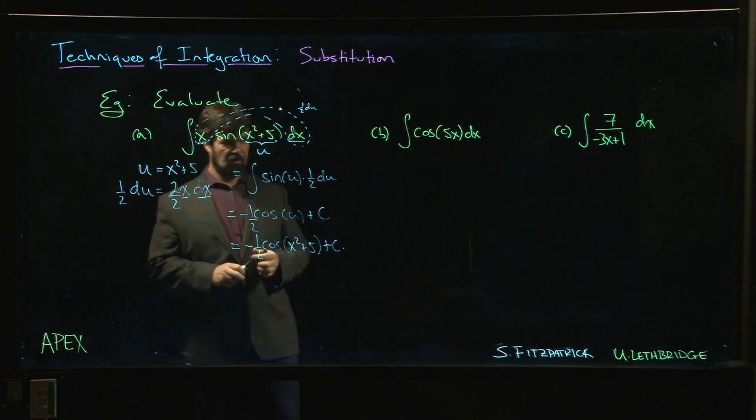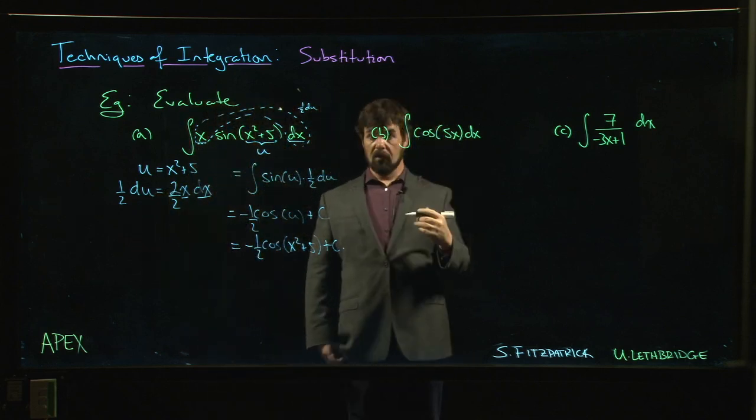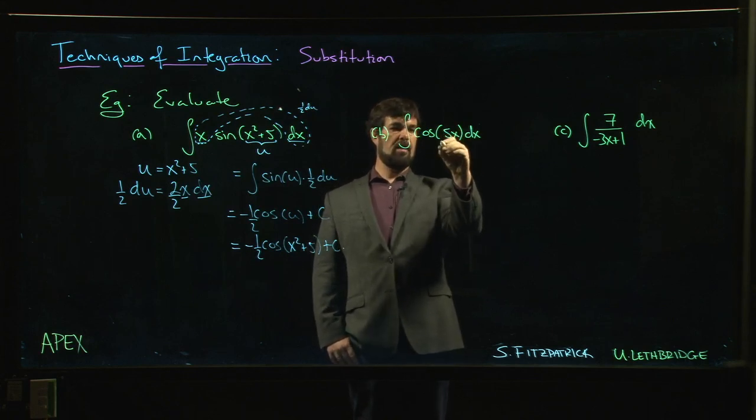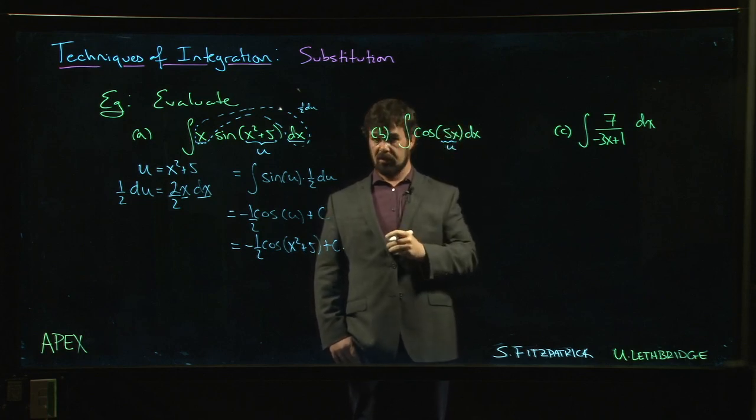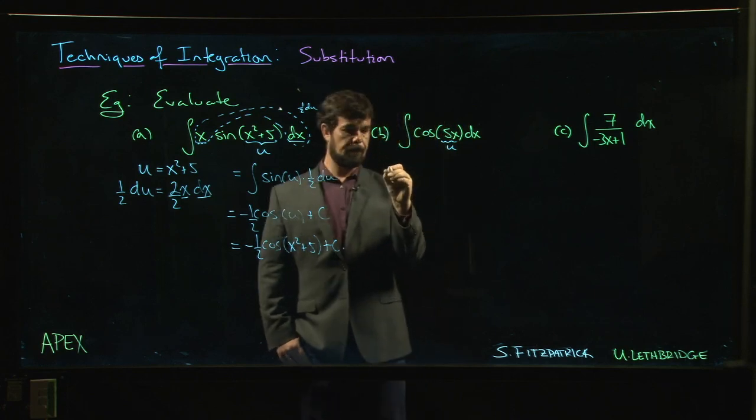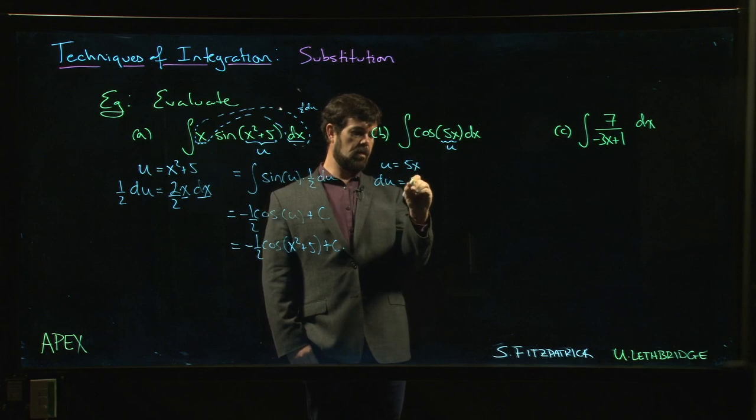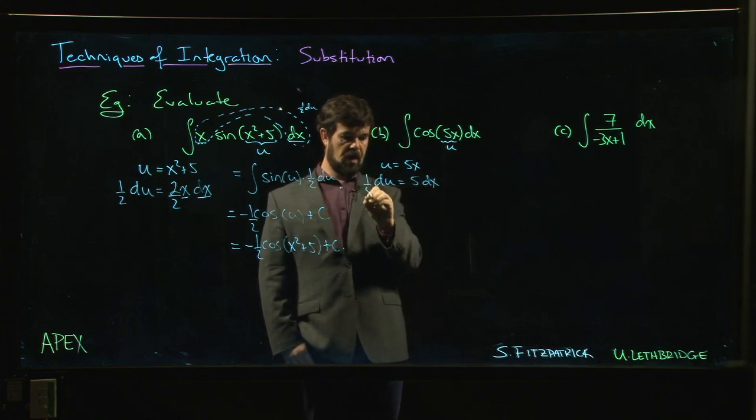Okay, so now we come to this one: cosine of 5x. These ones where you almost have x, there's just some constant multiple out front, you'll pretty quickly get used to these. u is equal to 5x, du is 5 times dx, so one over five times du is dx.